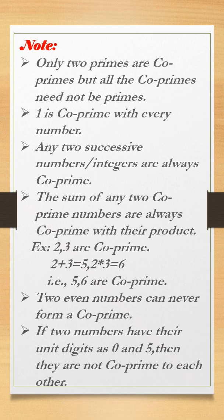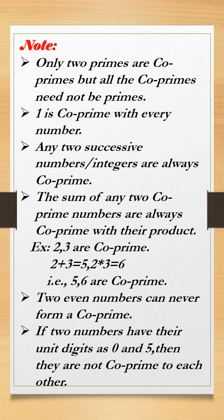Any two prime numbers are co-primes, but all co-primes need not be primes. That means two prime numbers must be co-prime numbers, but all co-prime numbers need not be prime numbers.